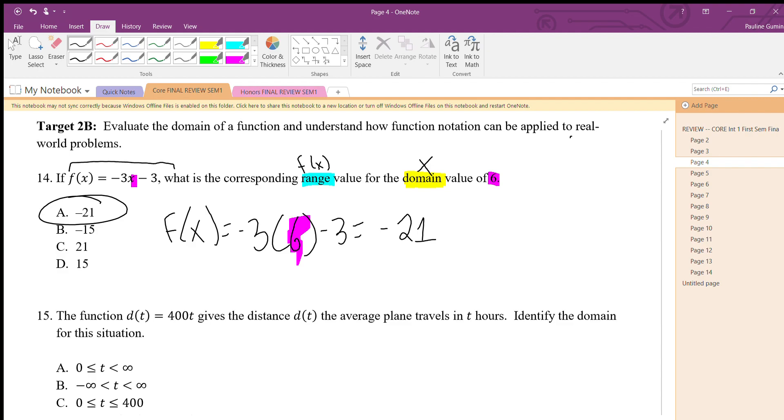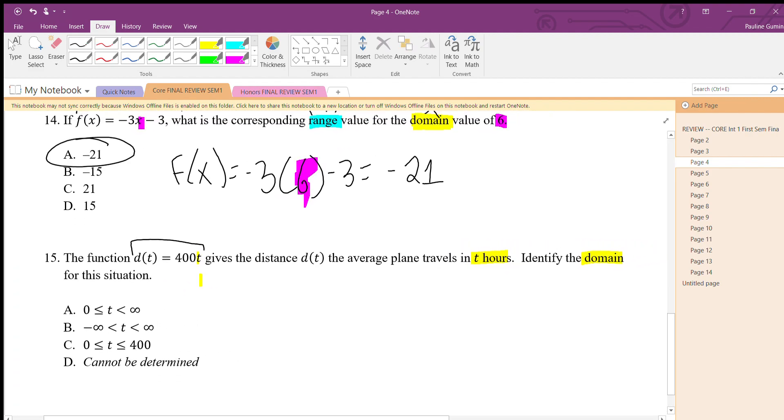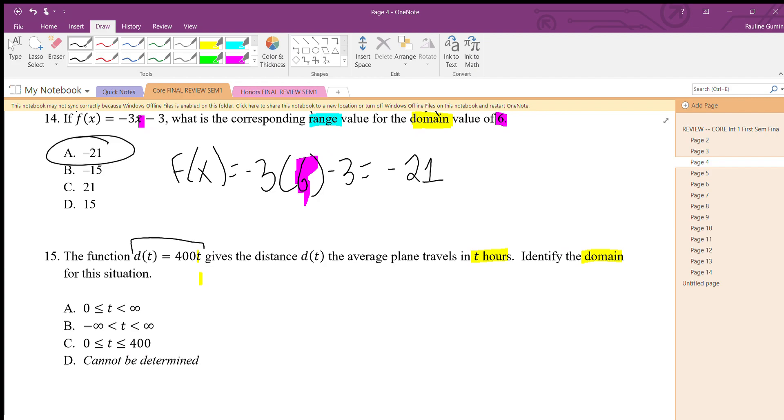Number 15, we have this function and it gives us the distance d(t) the average plane travels in t hours. Identify the domain for this situation. First, domain represents your x's - in this case we have t's and our domain is hours. I'm gonna cross off letter D right away because we can determine hours, that is something we can measure. The next one that jumps out at me is letter B.